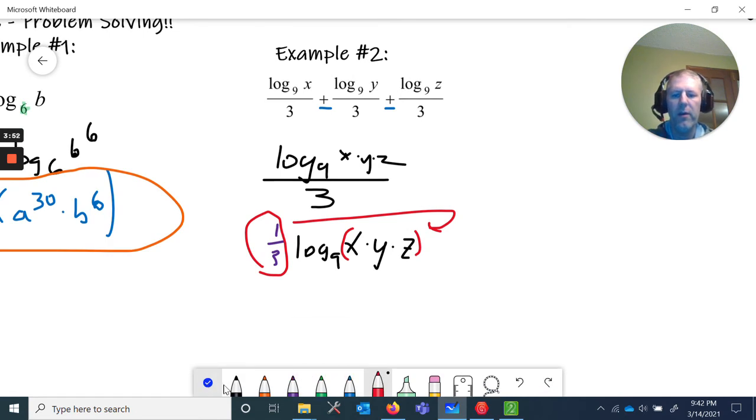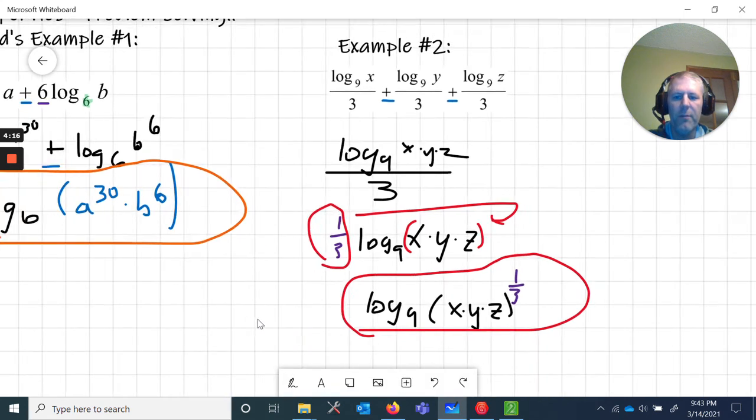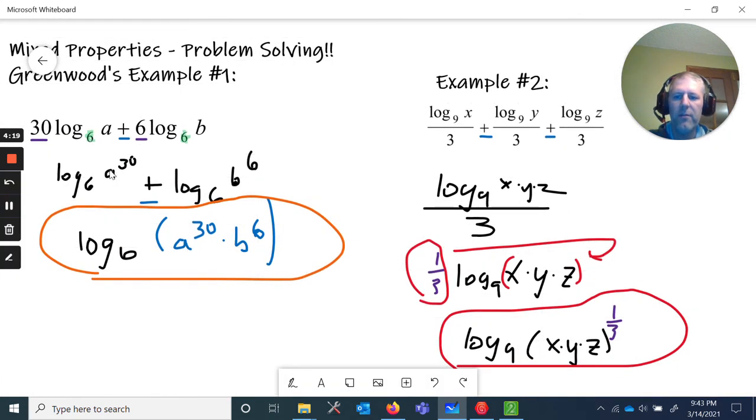So the final thing here is going to be log base nine of parentheses x times y times z - and I'm using dots for the multiplication but you don't have to write the dots in because if we took xyz it's implied it's multiplication. So there you go, and then we raise that whole thing, the x, the y, and the z, to the one third power.